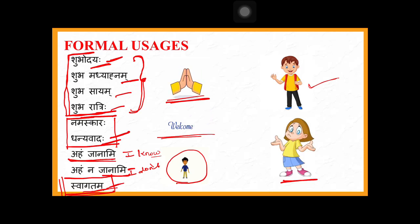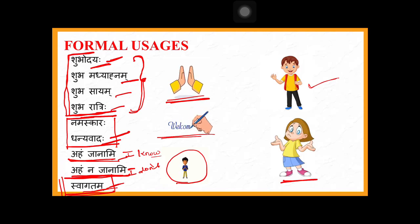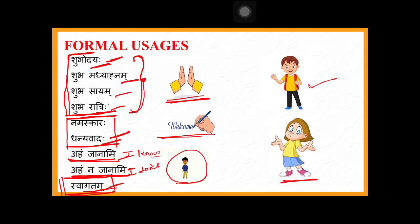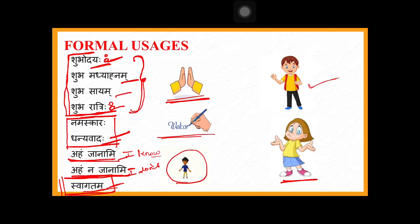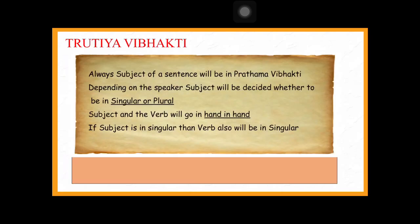Swagatam is for anyone, namaskara to anyone, dhanyamadha to anyone. If you start using these formally in daily life you will retain them. Remember: say shubha ratrihi, not just ratri, and shubha daya, not just daya. These formal usages don't require vibhakti case endings or gender matching — use them as they are.